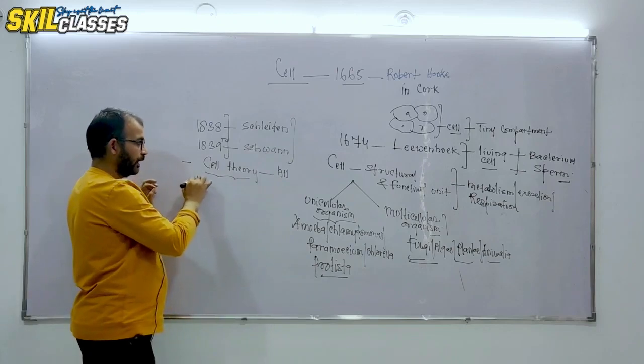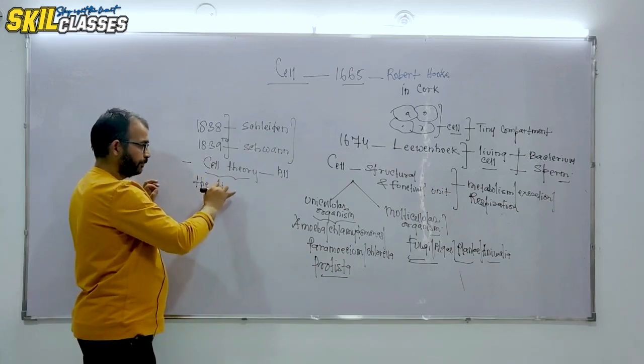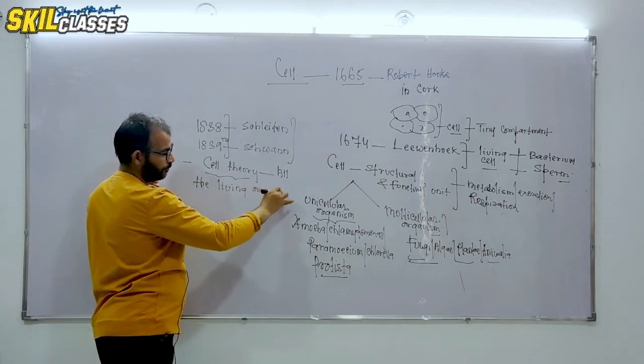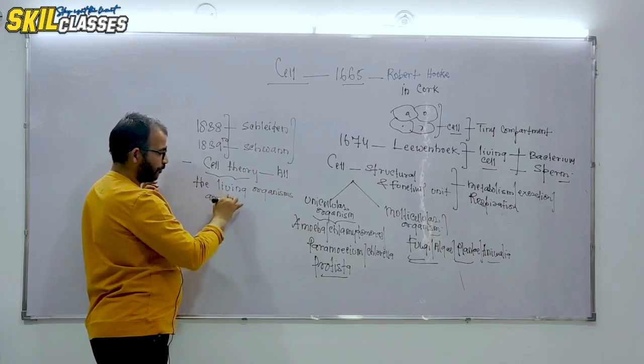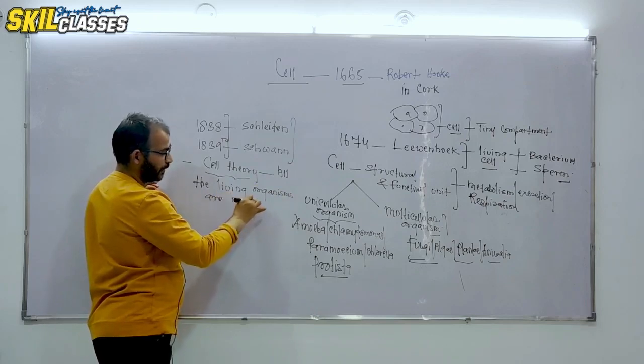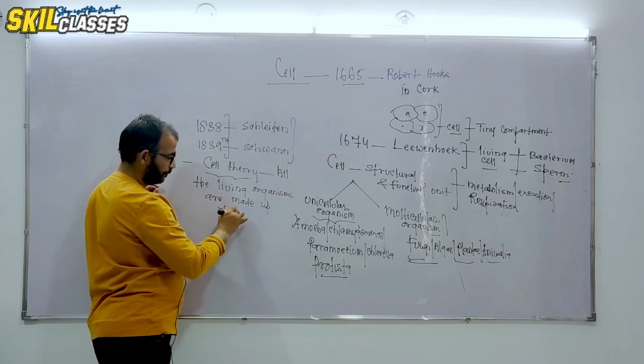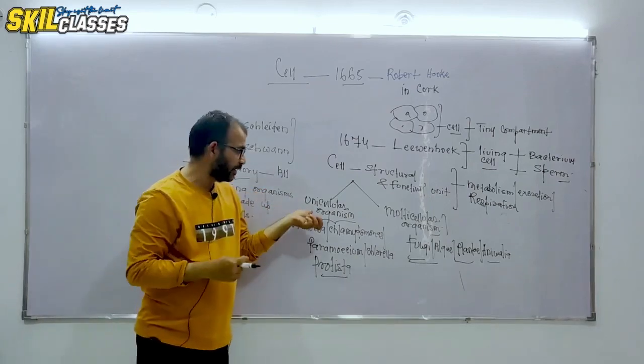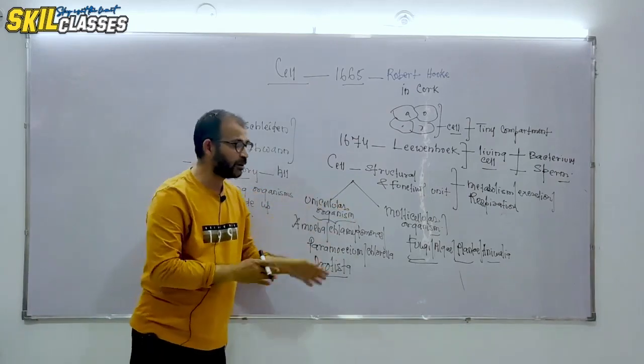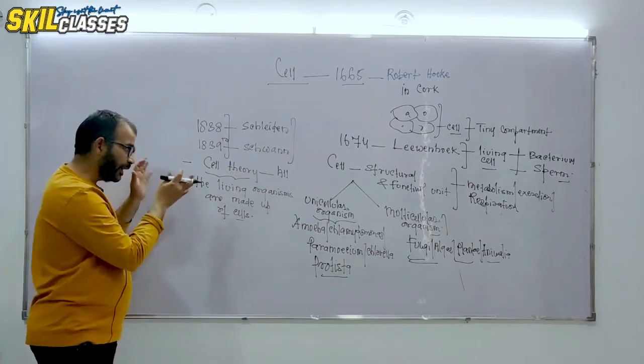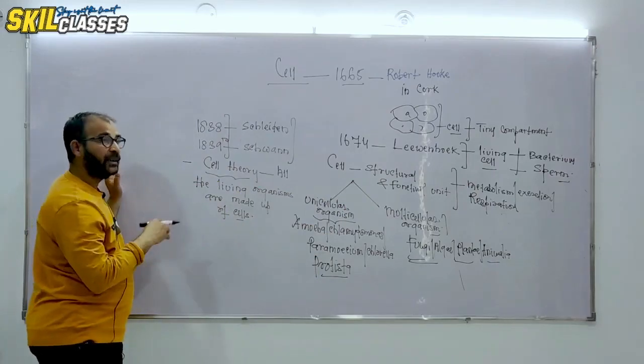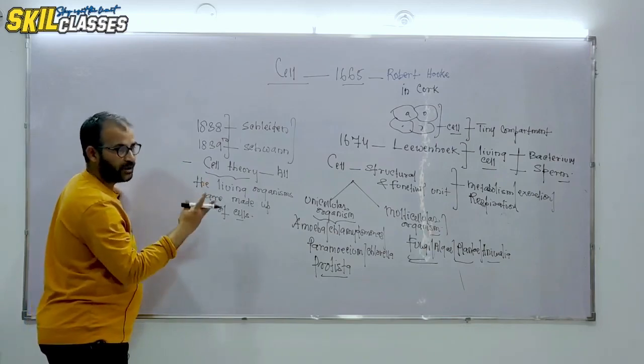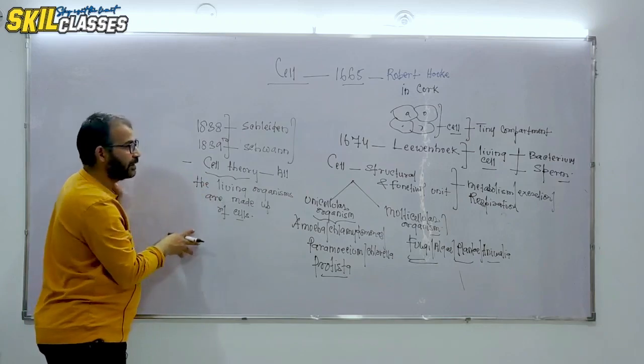Cell theory states that all living organisms are made up of cells. Unicellular organism is made from one cell, multicellular organism is made from many cells. So cell theory stresses that all living organisms are made from one cell or many cells. We call it cell theory.